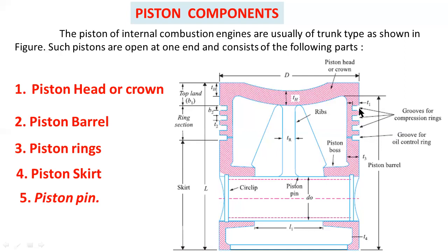The piston barrel consists of piston ring section, skirt, and piston pin. Specifically, the piston barrel contains compression rings, oil rings, piston pin or gudgeon pin, and piston skirt. The length below the piston head is called the piston barrel.